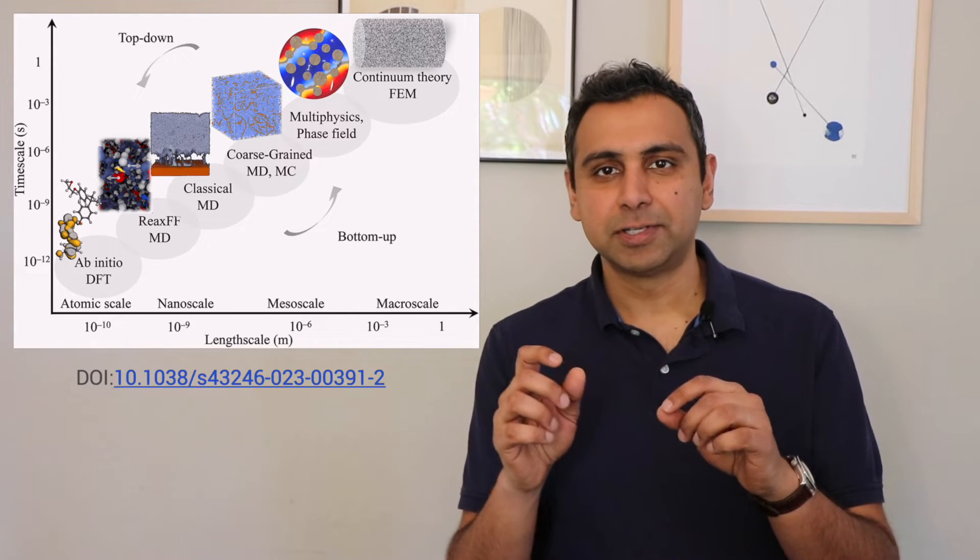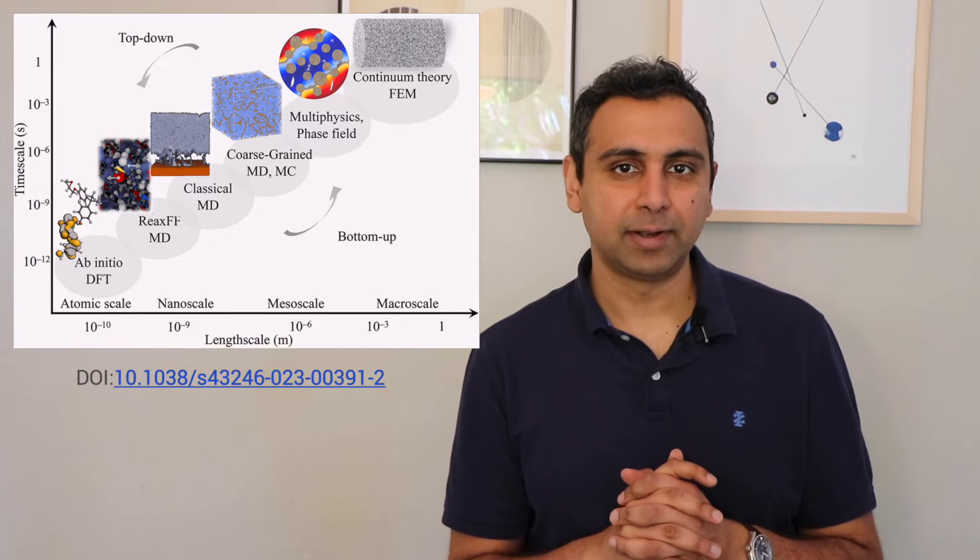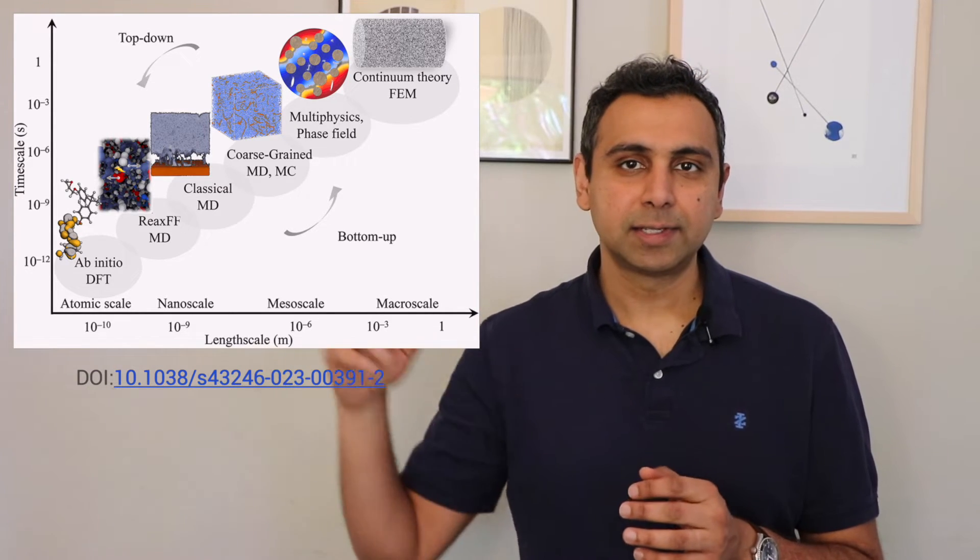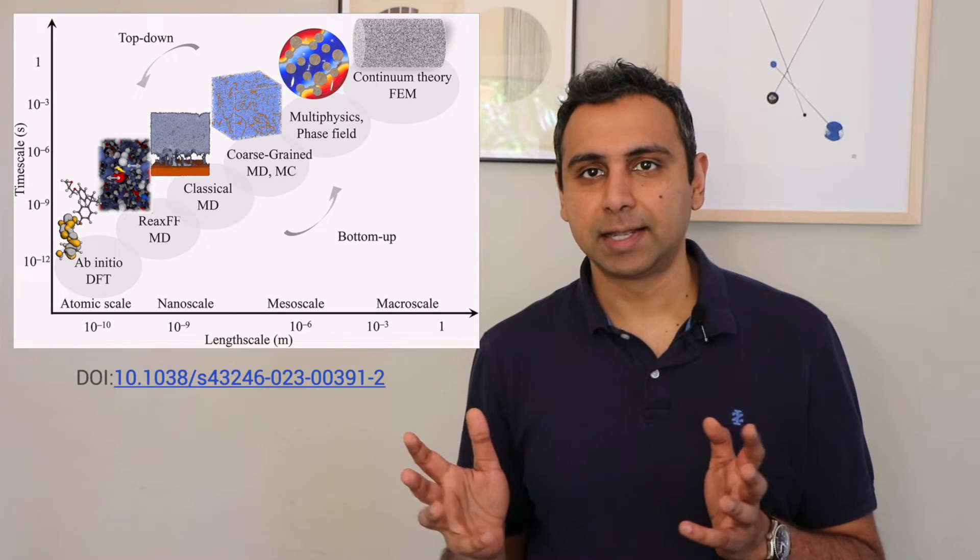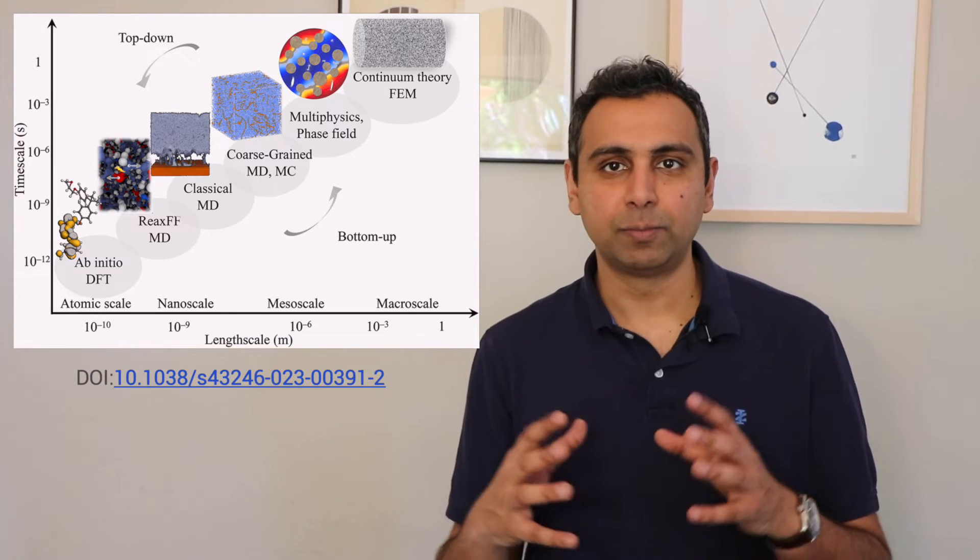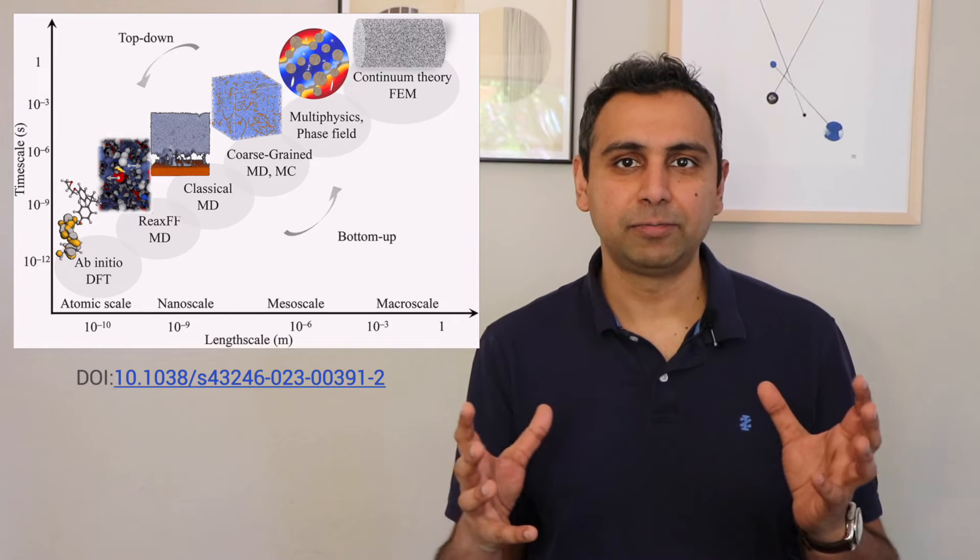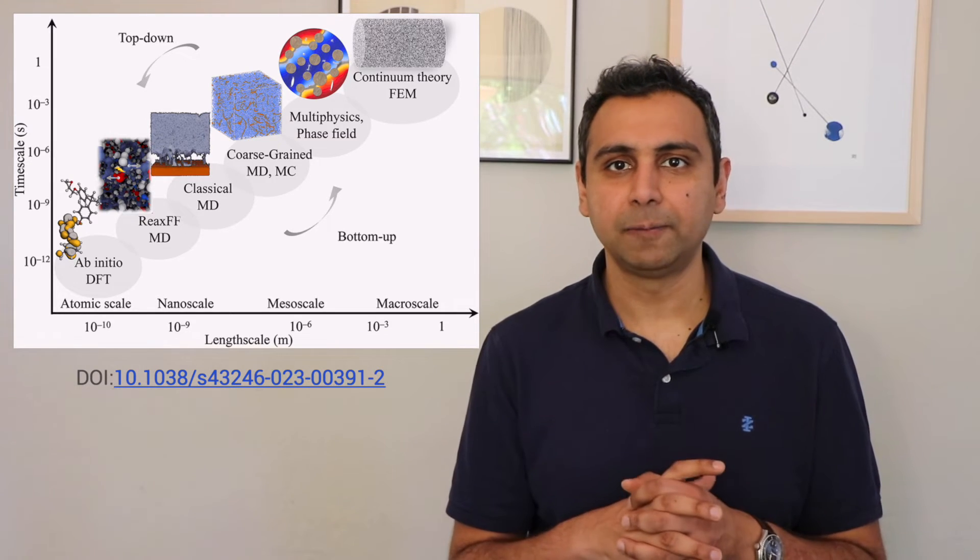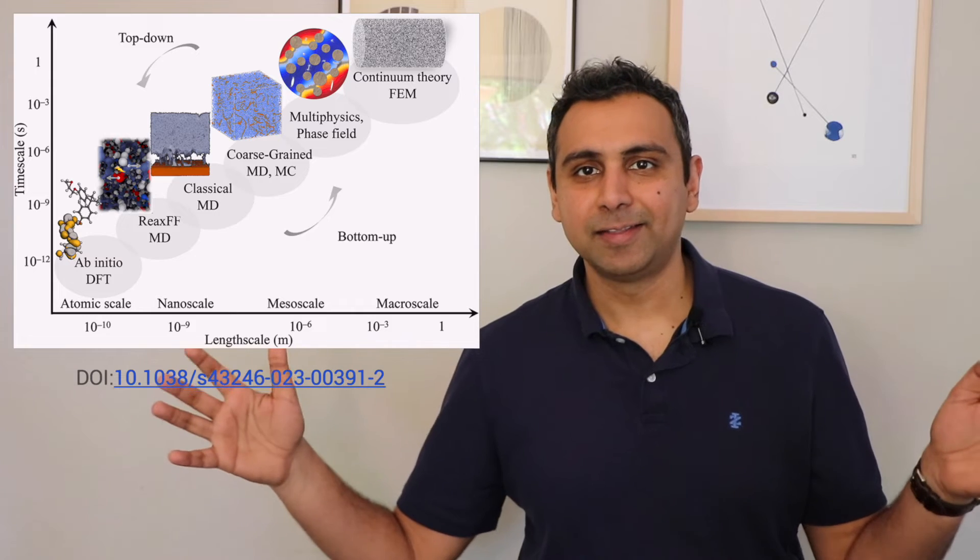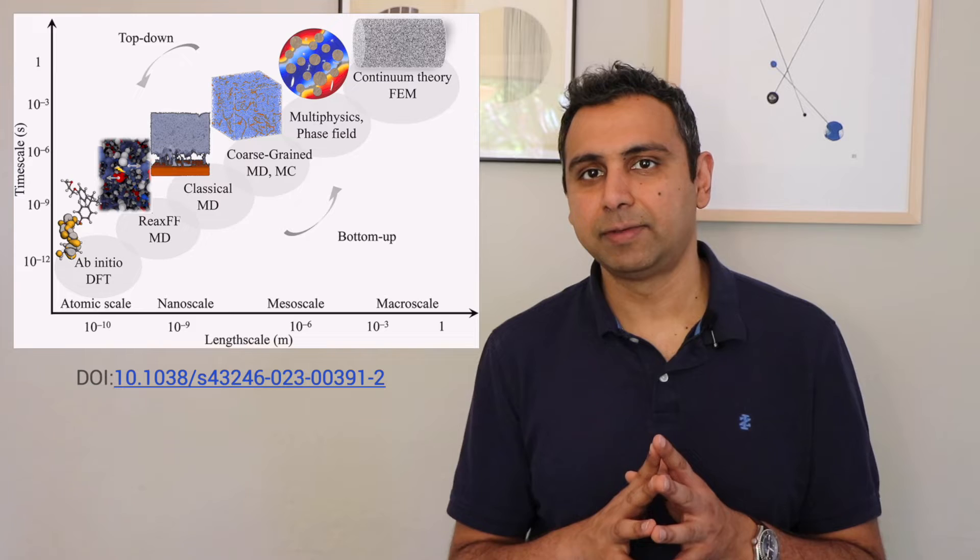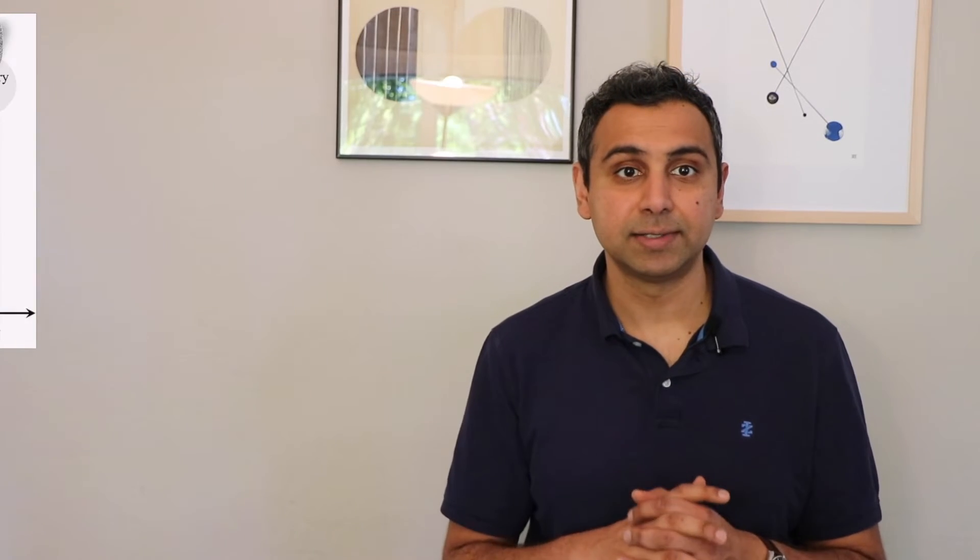So you still have atom interactions, but now they don't have really accurate electron interactions anymore. And then as you get to even higher length scales, you might even use modeling techniques that get rid of atoms, and instead group a bunch of atoms with the same type of behavior together as a particular phase, and then do what's called phase field modeling. Then as you get even to higher length scales, like a car body, you might just treat materials as a continuum body instead of an actual set of atoms or phases.